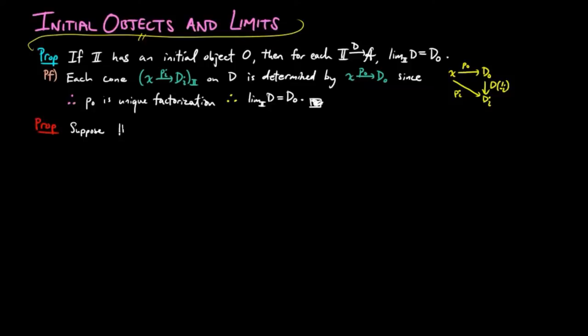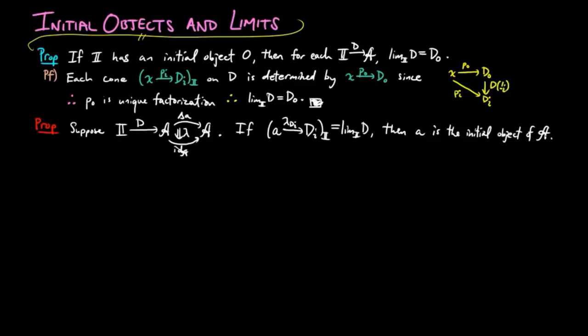We also have the following. Suppose d is a functor and lambda is a cone on the identity functor of a with vertex a. If lambda di is the limit of d, then a is the initial object of the category a.